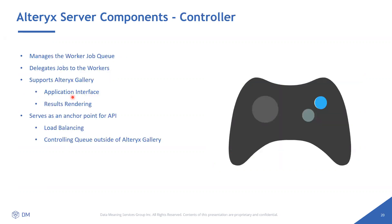The controller manages the worker job queue and delegates jobs to the worker. Best practice is to run two workflows simultaneously per worker. The controller is what supports the Alteryx gallery — if a user fills an application form, that's managed by the controller. Everything related to API connections — if other environments call the Alteryx server — is also managed by the controller.